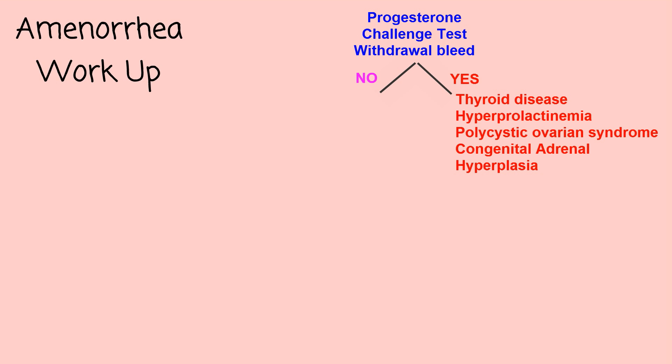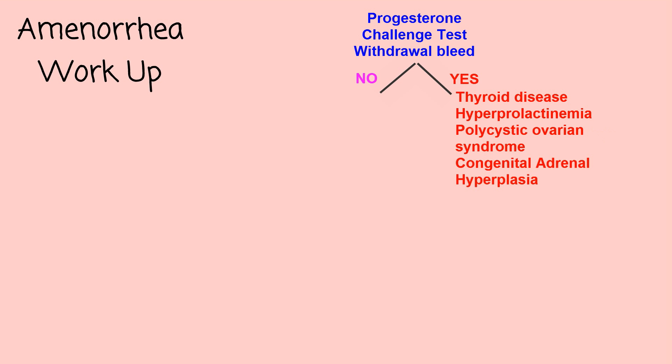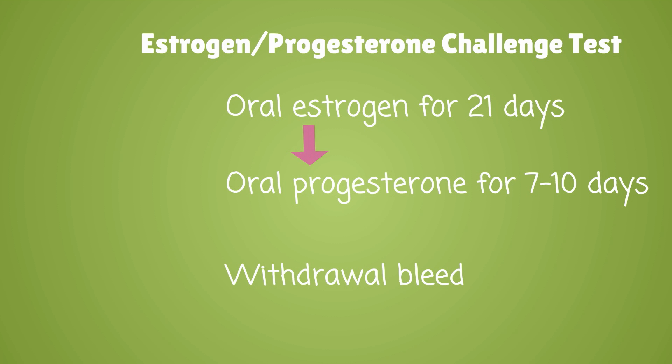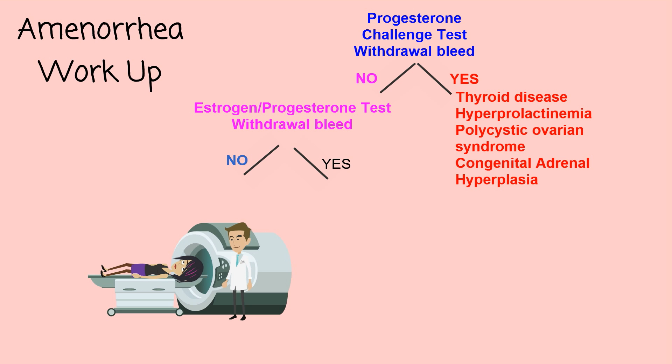If withdrawal bleeding does not occur, then a combined estrogen and progesterone test can be performed to differentiate an outflow tract abnormality from inadequate estrogen levels. Estrogen is given for 21 days, then progesterone is given for seven to ten days, and the patient is again evaluated for a withdrawal bleed. If no bleeding occurs after this test, then an ultrasound or MRI should be performed to look for anatomic abnormalities.